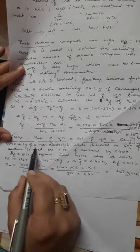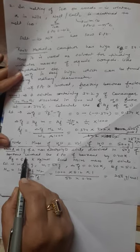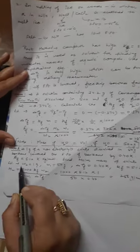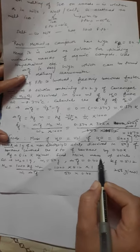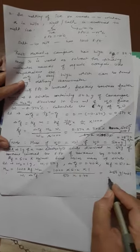Next numerical: 1 gram of a non-electrolyte solute dissolved in 50 grams of benzene lowers the freezing point of benzene by 0.40 Kelvin. KF is also given and you have to calculate molar mass of solute. We will apply directly the formula of molar mass and put the values. As all values are given directly, you will get this answer.